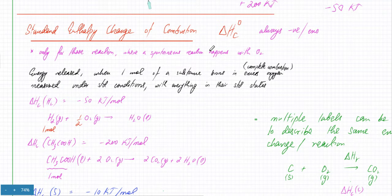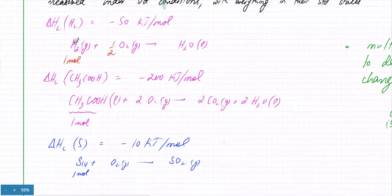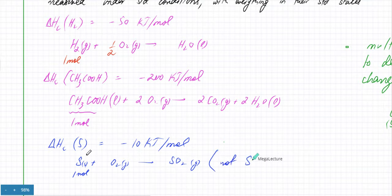If it's not a spontaneous combustion reaction — if it's only a reaction with O2 — that's not called enthalpy of combustion. It's the energy released when one mole of any substance is burned in excess oxygen under standard conditions. One mole of hydrogen burning is enthalpy of combustion of hydrogen; one mole of ethanoic acid burning is enthalpy of combustion of ethanoic acid. For sulfur, remember: the product is SO2, not SO3.